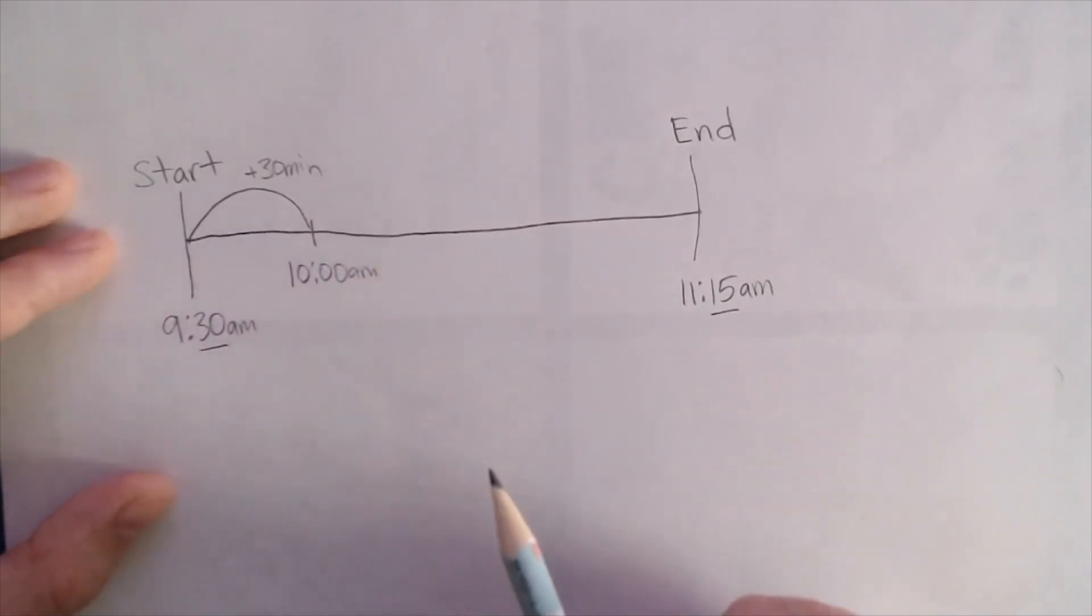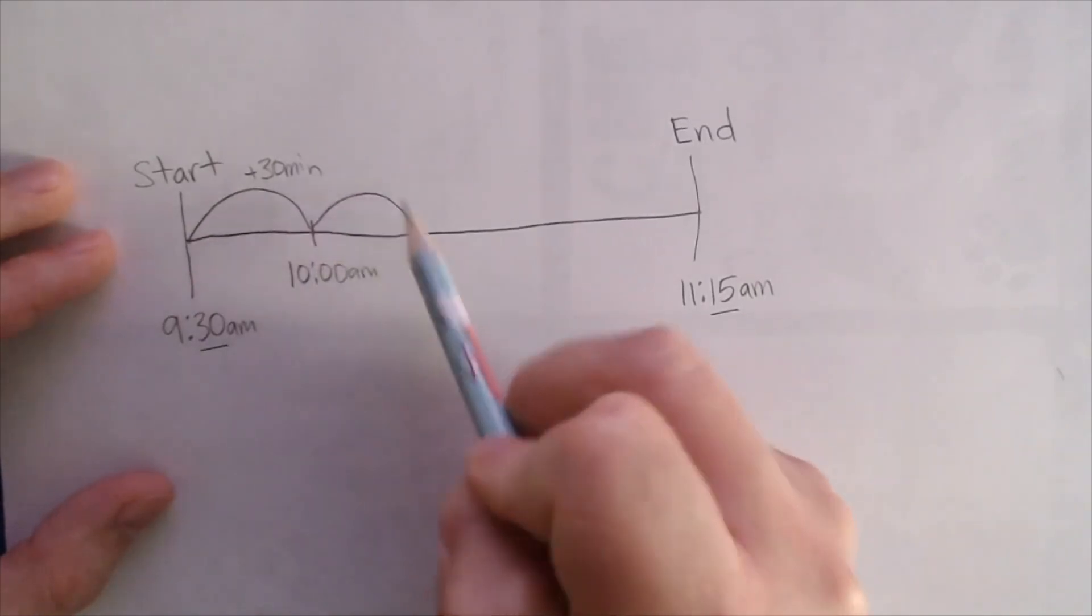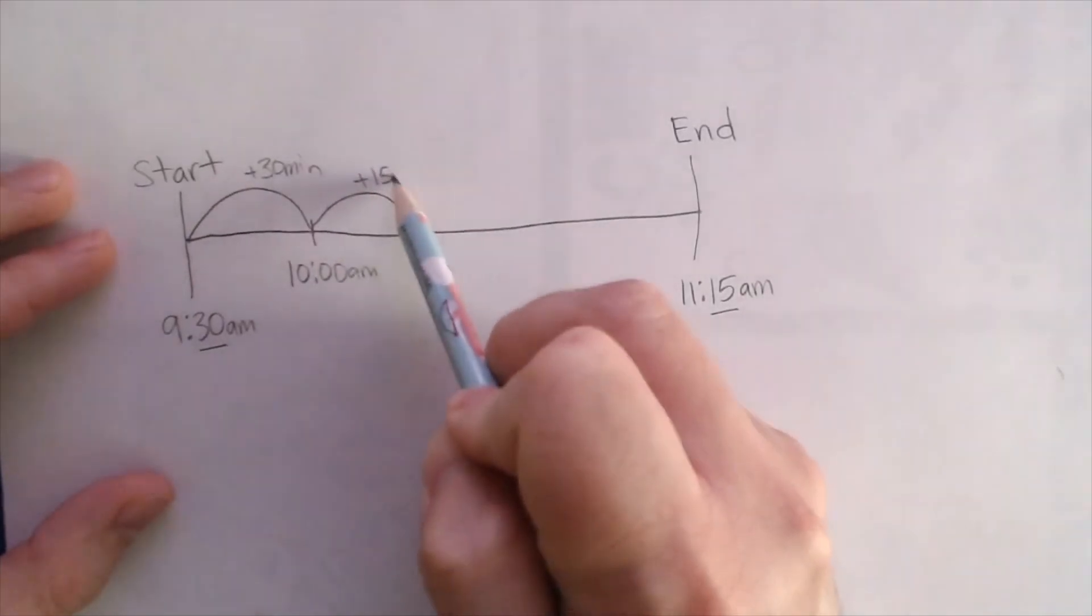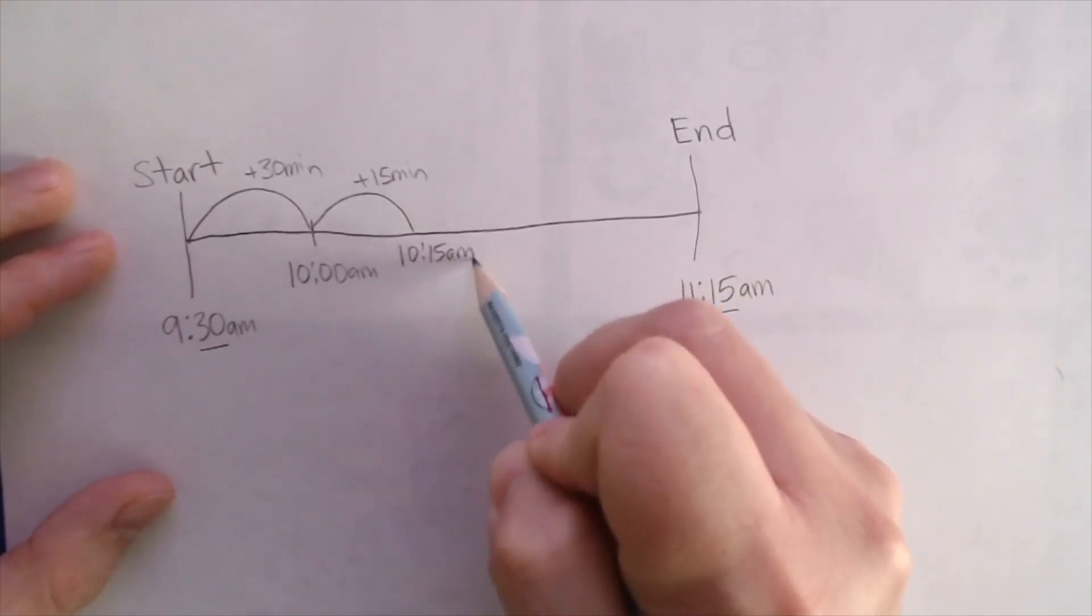Now, first, I added 30 minutes, because I know that 9:30 plus 30 minutes is going to take me to 10am. Once I'm at 10am, if I add 15 minutes, that'll put me at, you guessed it, 10:15am.